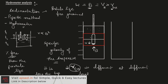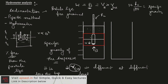The scale reading gives us the indirect value of the specific gravity. It is correlated such that if the reading RC is measured, then 1 + RC/1000 gives the specific gravity of the soil suspension.